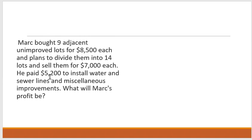That was a pretty simple one. Let's do a more complicated one — again, these are straight from practice exams. Mark bought nine adjacent unimproved lots for $8,500 each. He plans to divide them into 14 lots and sell them for $7,000 each. He paid $5,200 to install water and sewer lines and miscellaneous improvements. What will Mark's profit be?